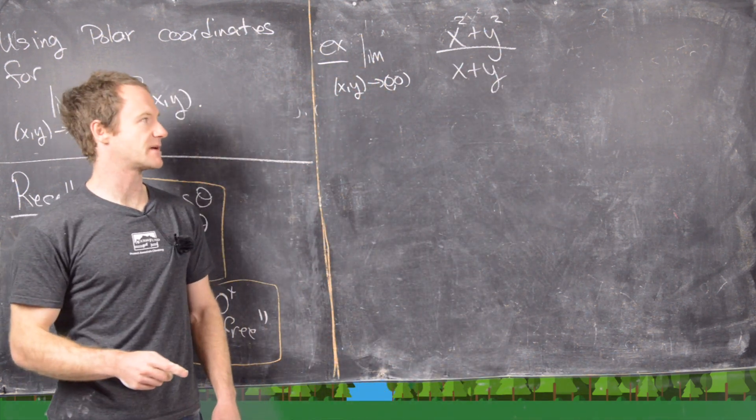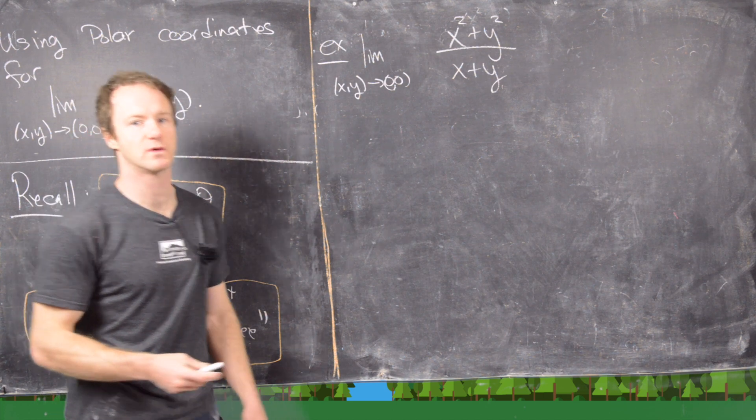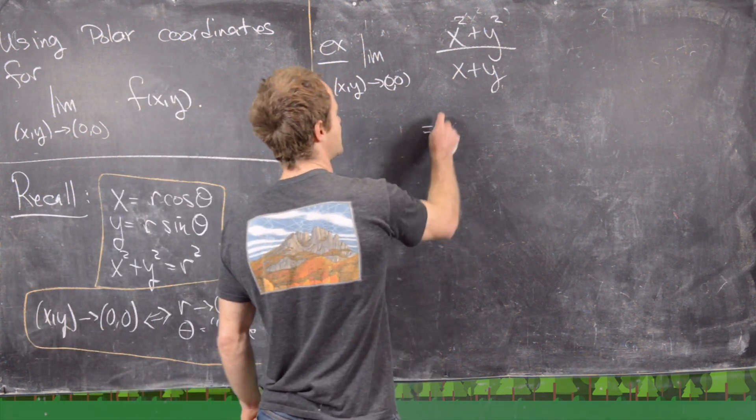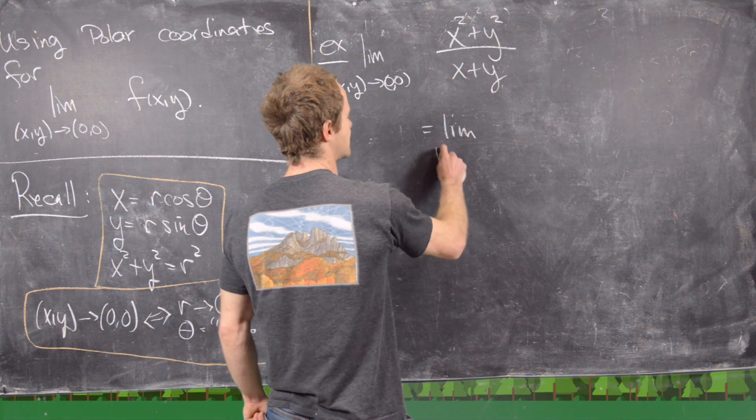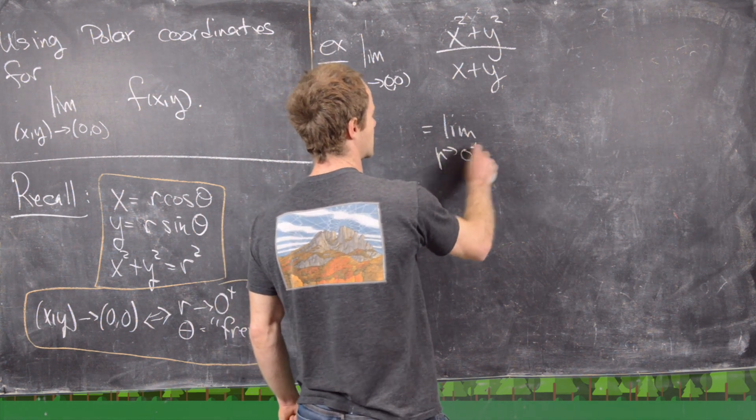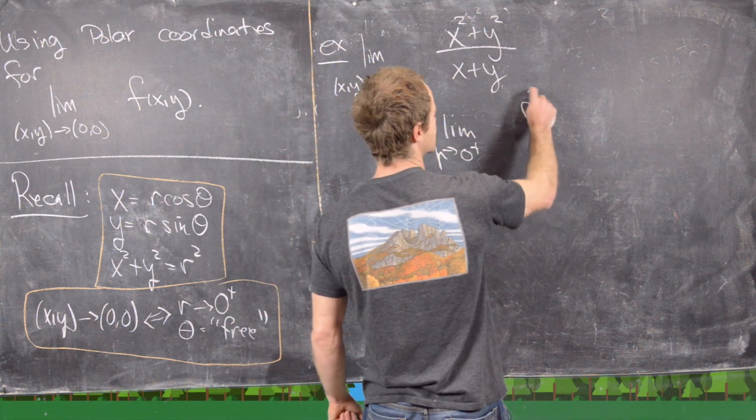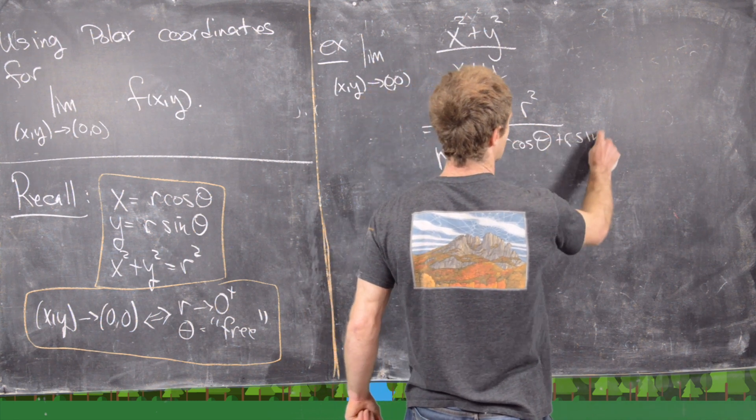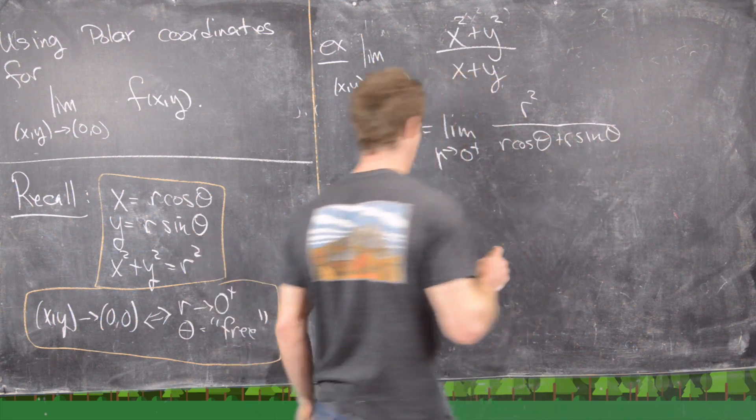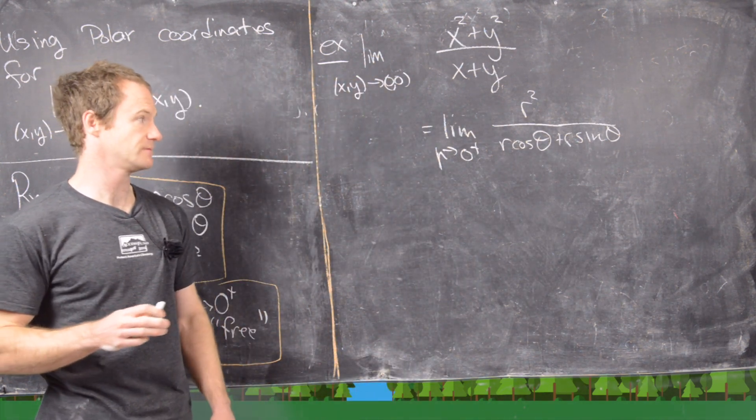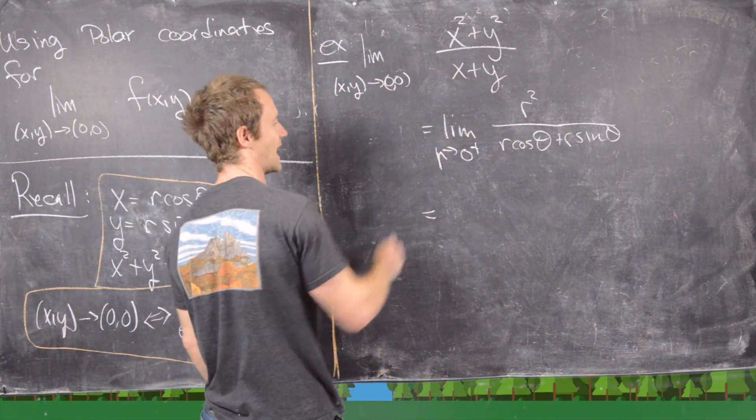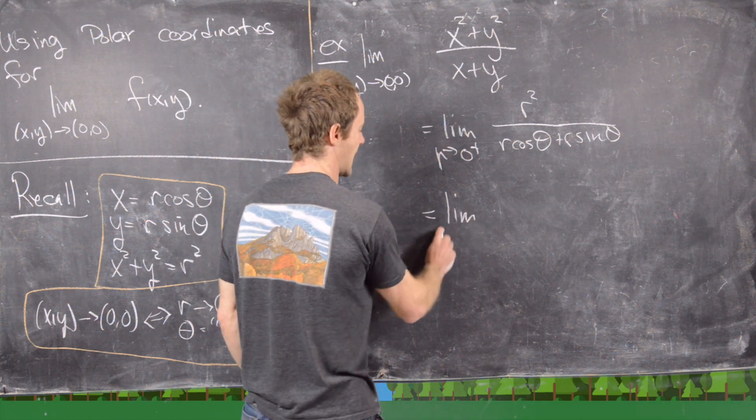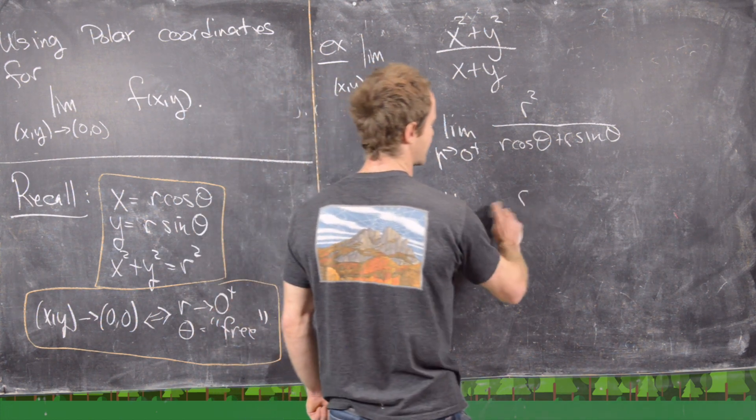So it seems like maybe we could do the same substitution here, and we'll try, but we'll see where it ends up being a little bit sticky. This is the same thing as the limit as r goes to zero from the right of r squared over r cosine theta plus r sine theta using this polar coordinate substitution. But now we can factor an r out of the denominator, cancel with the numerator...